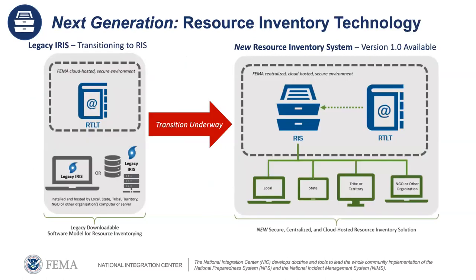This slide shows what the legacy architecture looked like versus what it looks like now. Previously, the RTLT existed within the cloud-hosted secure ATO boundary, while the legacy IRIS was either on a local computer or server with no direct connection to the cloud environment. Now, the RTLT connects directly into RISC within the cloud-hosted environment, and that information still connects and pushes out to third-party users.